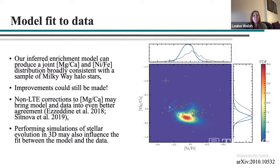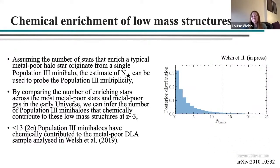The model and the data are broadly consistent, but there is still a small offset in magnesium-to-calcium. Improvements can still be made — recent work by Rana Ezzeddine suggests that non-LTE corrections to magnesium-to-calcium may bring the model and data into better agreement. Performing stellar evolution simulations in three dimensions might also influence the fit between model and data.